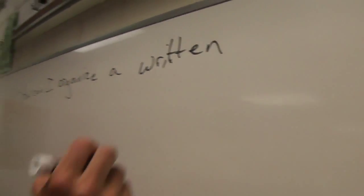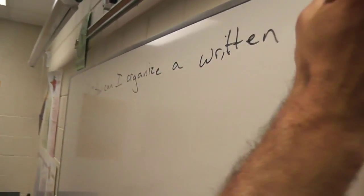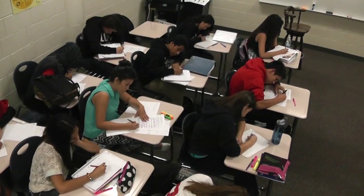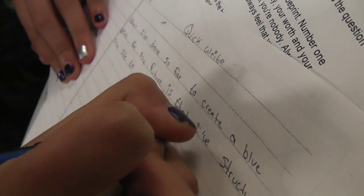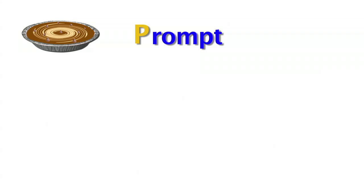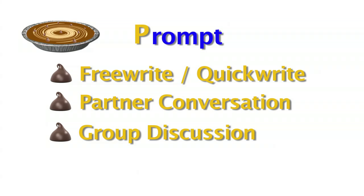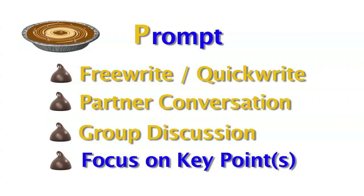The first step in the reading process is getting students thinking about the topic that will be read about. You could give students a topic to do a quick write about, so they respond to a question on the board and write for two to five minutes, just getting the juices flowing. The prompt can be done in a free write, a partner conversation, or a large group discussion, but it should center around what they're going to be reading and what we want them to pull out while reading.